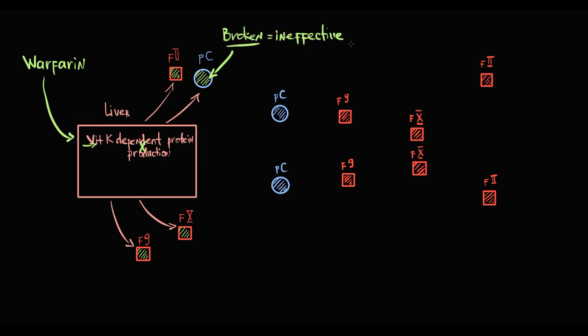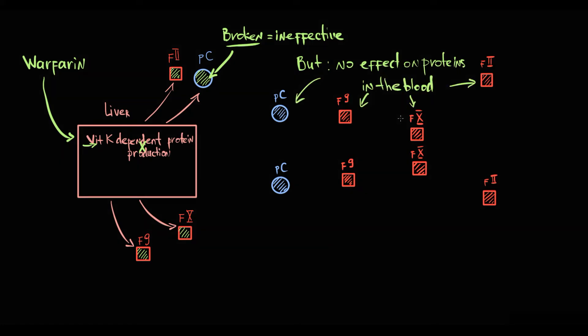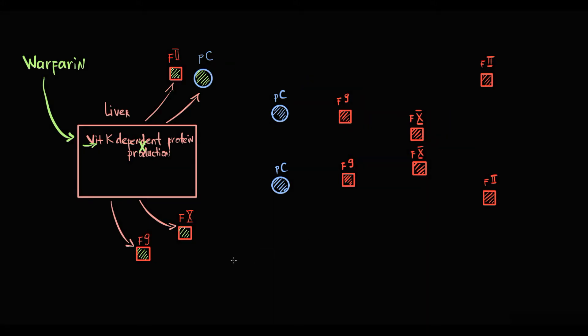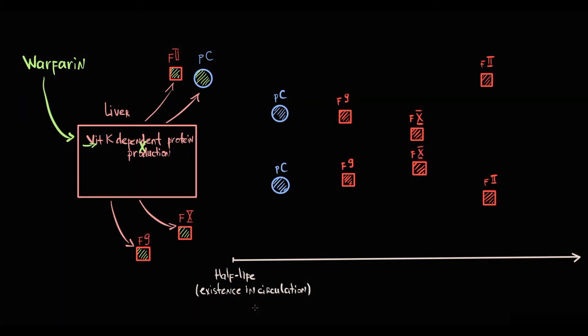But very important: warfarin does not affect the structure of already synthesized proteins that are already present in the blood. Warfarin acts only on production of these proteins. To understand how warfarin affects coagulation, we have to know that all coagulation factors and anticoagulant proteins have different periods of half-life, which is the period that they exist in the circulation. For example, protein C is a short-lived protein with a half-life of approximately 8 hours.